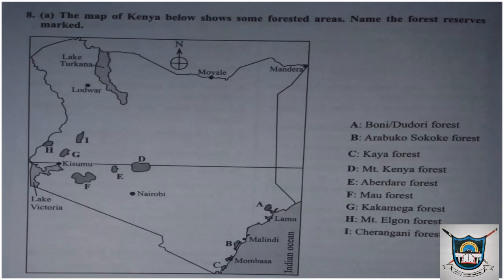Then we have the Mount Kenya forests, the Aberdare forests, the Mau forests, the Kakamega forests, the Mount Elgon forests, and the Cherangani forests. You can see the distribution of those forests across Kenya.